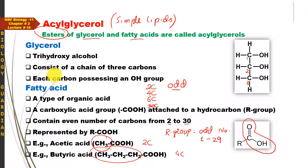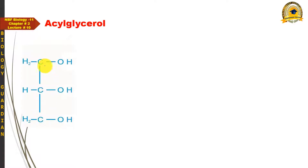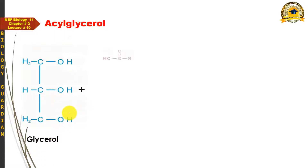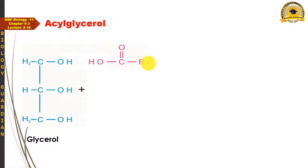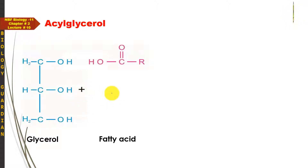یہ تھے glycerol اور fatty acid، اور ان دونوں کی esterification سے جو molecule بنے گا اسے acylglycerol کہا جائے گا۔ Acylglycerol کی formation میں glycerol molecule participate کرے گا اور اس کے ساتھ fatty acid react کرے گا۔ Acylglycerol میں fatty acid کوئی بھی type کا ہو سکتا ہے — چاہے short chain ہو یا long chain۔